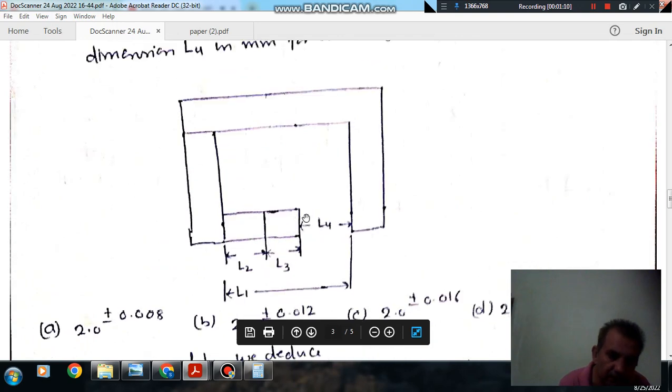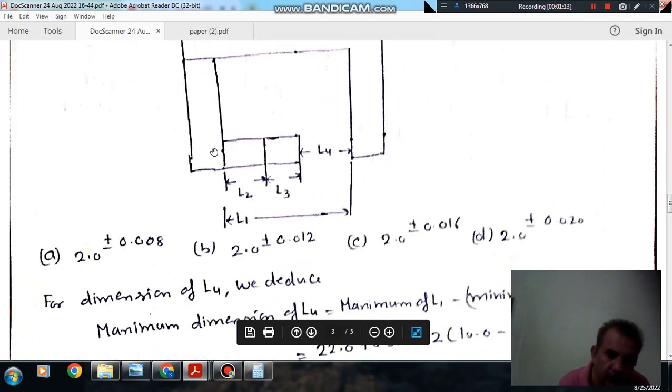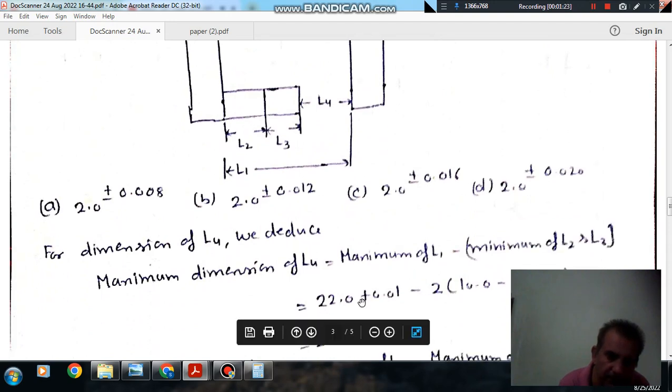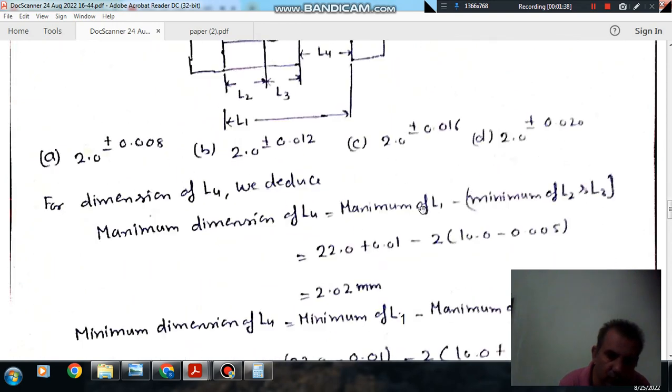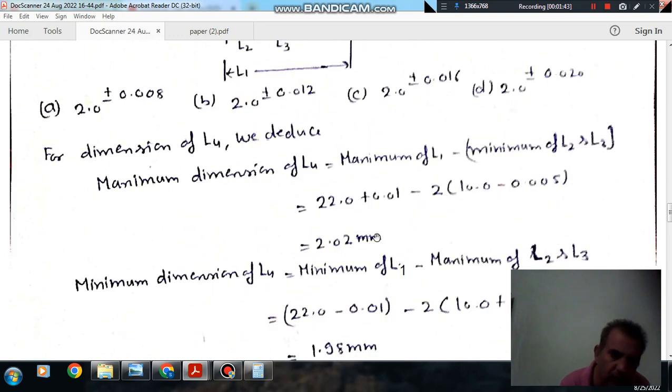For maximum dimension of L4, we will take maximum dimension of L1 and minimum dimension of L2 and L3 and subtract this L2 and L3 from L1. So maximum dimension of L1 is 22.01 and minimum dimension of L2 and L3, because L2 and L3 are equal, is 10.0 minus 0.005. So it will be 2 into 10 minus 0.005.